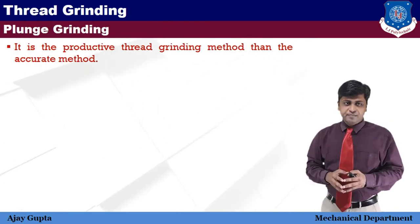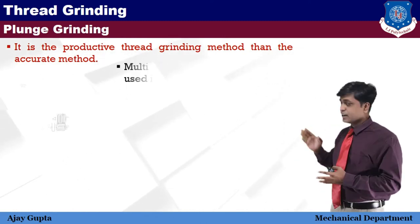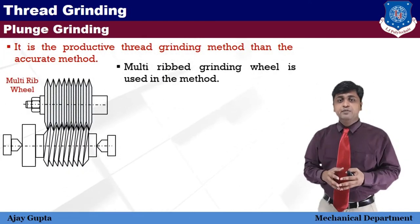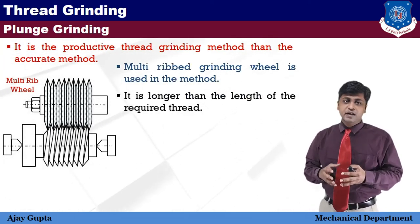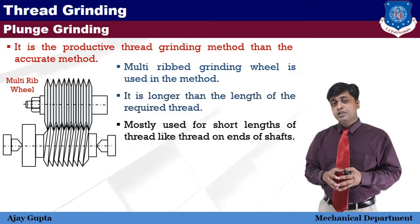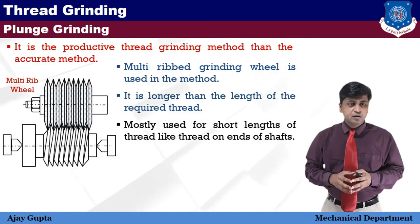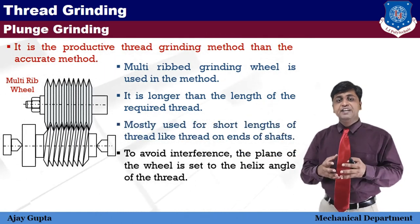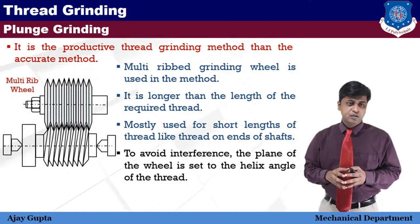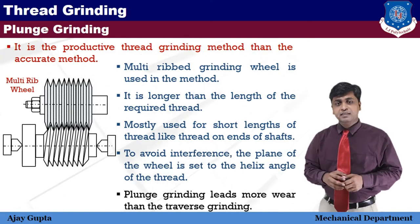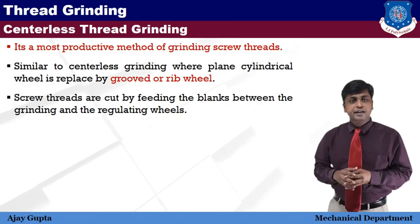Now let's talk about plunge grinding. It is a more productive thread grinding method than the traverse method. As shown in the diagram, a multi-rib grinding wheel is used in plunge grinding and it is longer than the length of the required thread. Plunge grinding is mostly used for short lengths of thread, such as threads on the ends of a shaft. In this method, to avoid interference, the plane of the wheel is set to the helix angle of the thread. Plunge grinding leads to more wheel wear than transverse grinding.